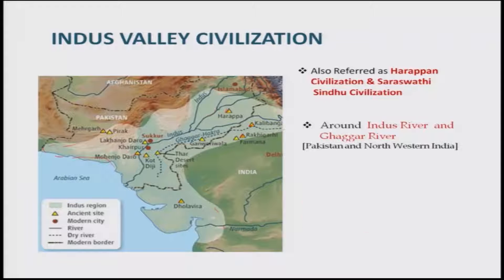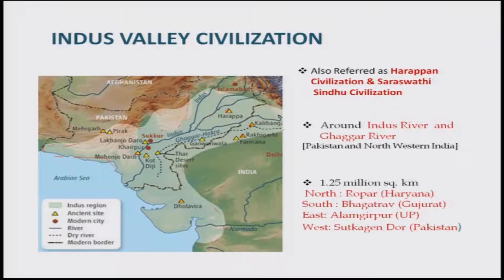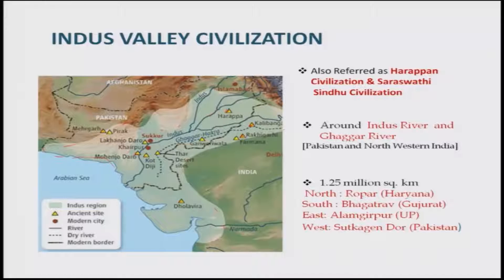The 1.25 million square kilometer extent runs from Rupar in present-day Haryana in the north, to Bhagatra in Gujarat in the south, and Alamgirpur in UP near Meerut in the east, and Sutkagan Dor in the western side. It was quite a large area as per the excavations by the Archaeological Survey of India.